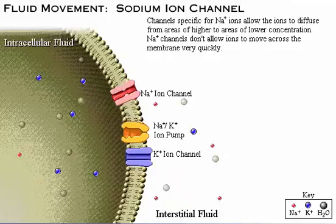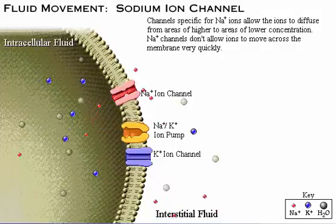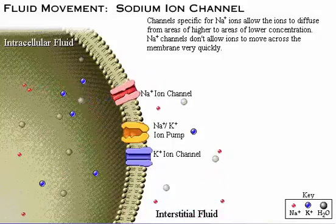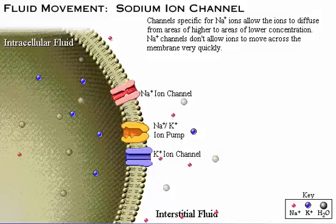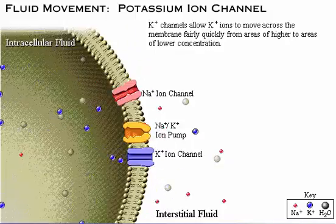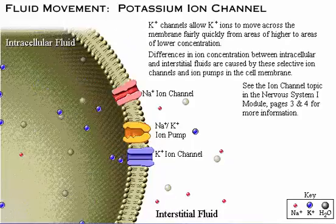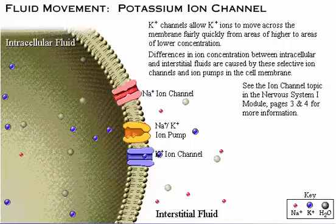Channels specific for sodium ions allow these ions to diffuse from areas of higher to areas of lower concentration. In most cells, the sodium channels don't allow sodium ions to move across the membrane very quickly. The channels specific for potassium ions allow these ions to move across the membrane fairly quickly from areas of higher to areas of lower concentration. Differences in ion concentration between intracellular and interstitial fluids are caused by these selective ion channels and ion pumps in the cell membrane.